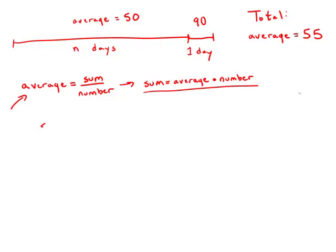The sum for the first n days would be the average, 50, times the number n, which equals 50n.